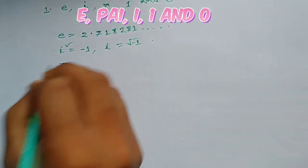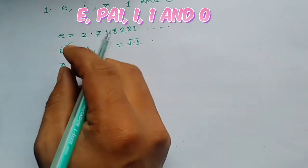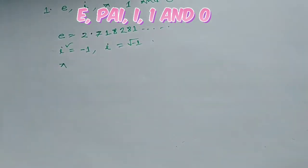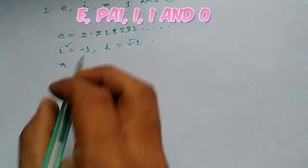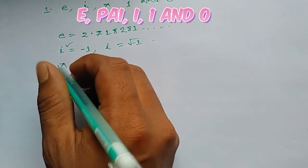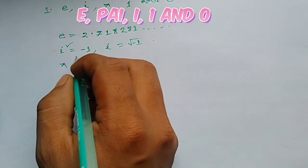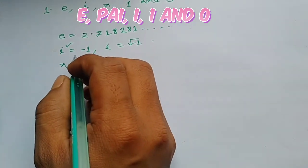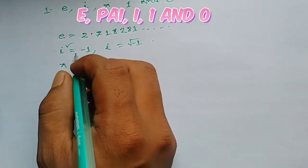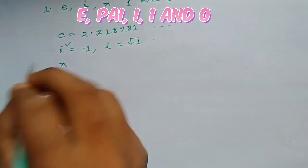Next, pi. Pi is the ratio of a circle's circumference to its diameter. When we say pi, we mean the ratio of the circumference and the diameter of a circle.